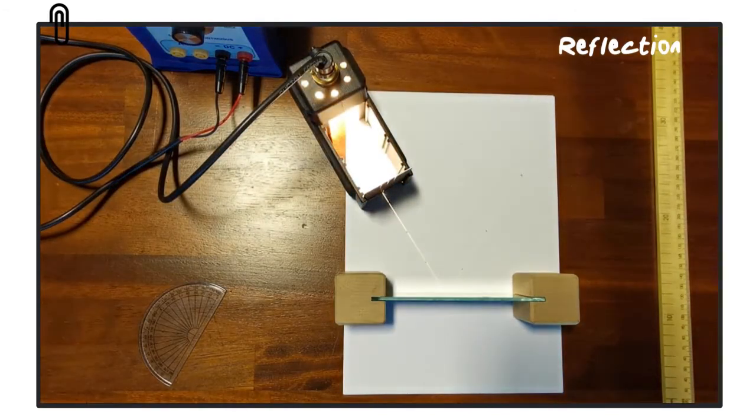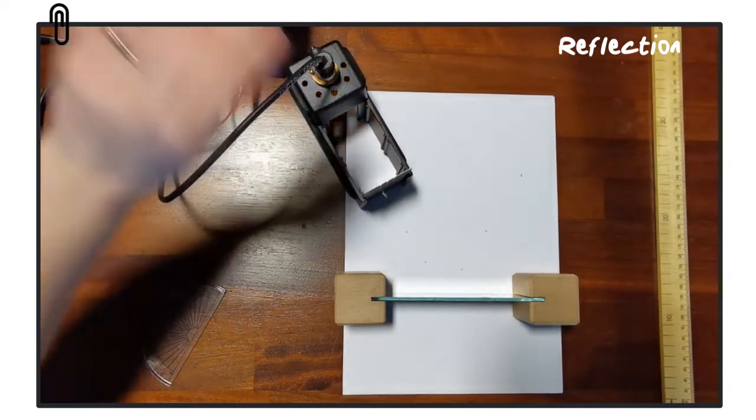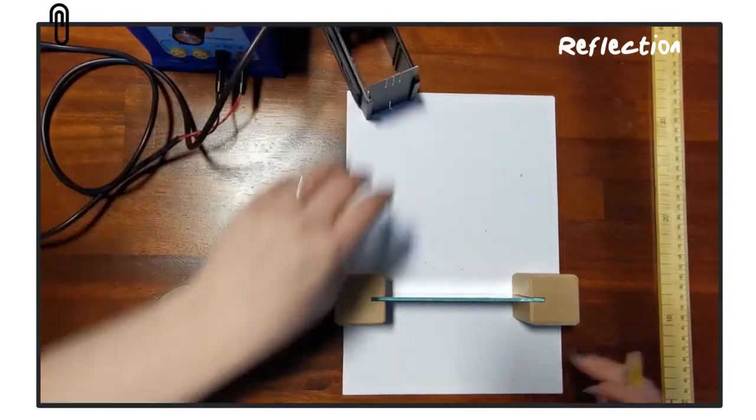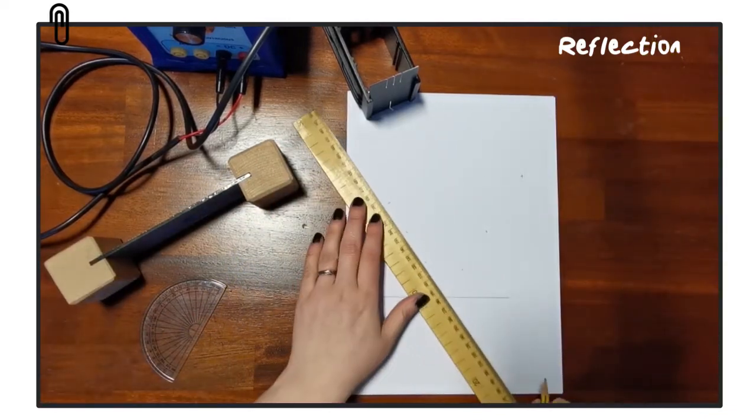We can then turn off the ray box and move the mirror out of the way and use a ruler to join up those crosses. This will show us exactly where the path of light went as it entered the mirror and then reflected.